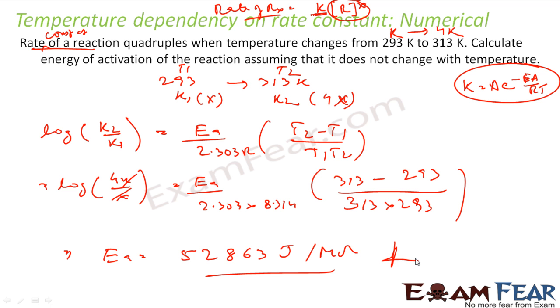This will be Joules per mole per Kelvin. This will be in Kelvin. This will be Kelvin square. One Kelvin will get cancelled from here, one will get cancelled from here. Joules per mole is the unit that is left.